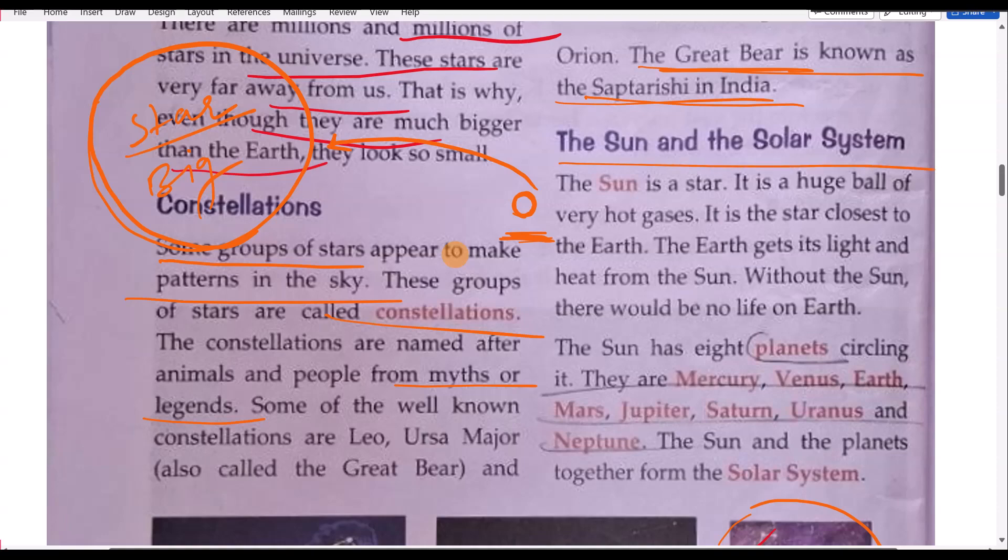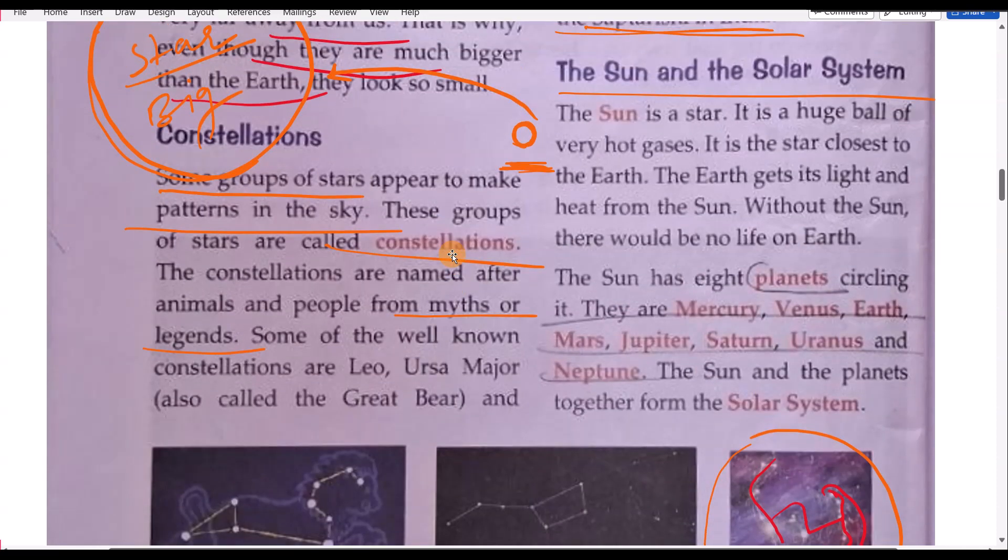The sun and solar system. So you know children, the sun is a part of solar system. Sun is a star, is a huge ball of very hot gases, and the star closest to the Earth. The Earth gets its light and heat from the sun. So suppose now is the rainy season, but in summer season we will get the light and heat from the sun.